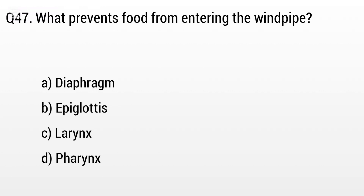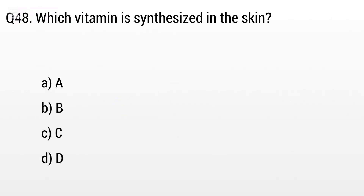Question 47. What prevents food from entering the windpipe? Option A: Diaphragm, B: Epiglottis, C: Larynx, D: Pharynx. The right answer is option B, Epiglottis.